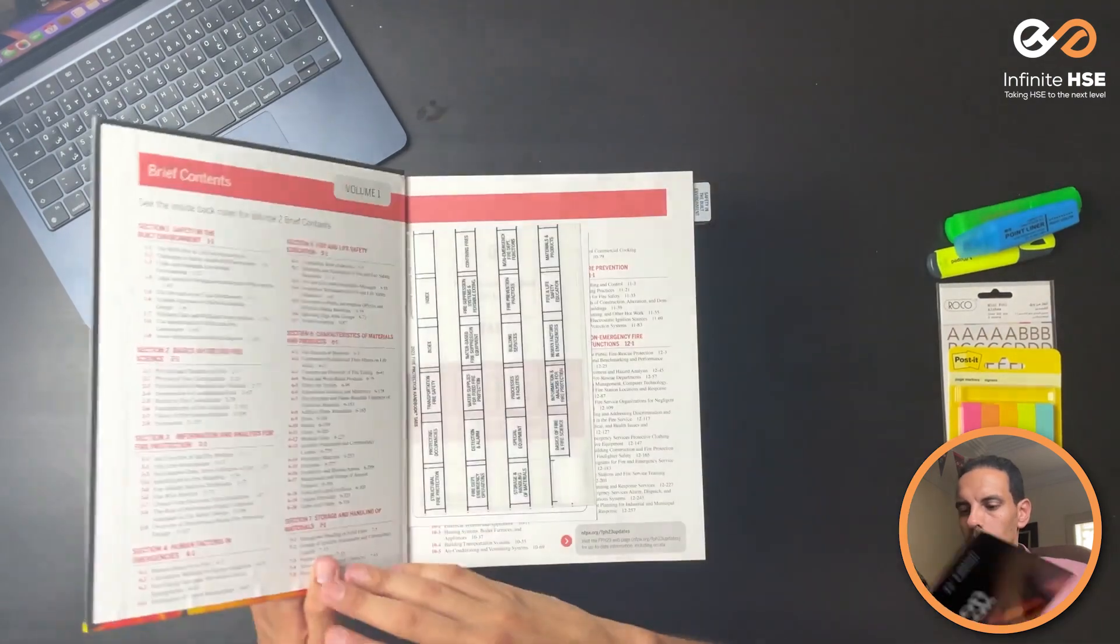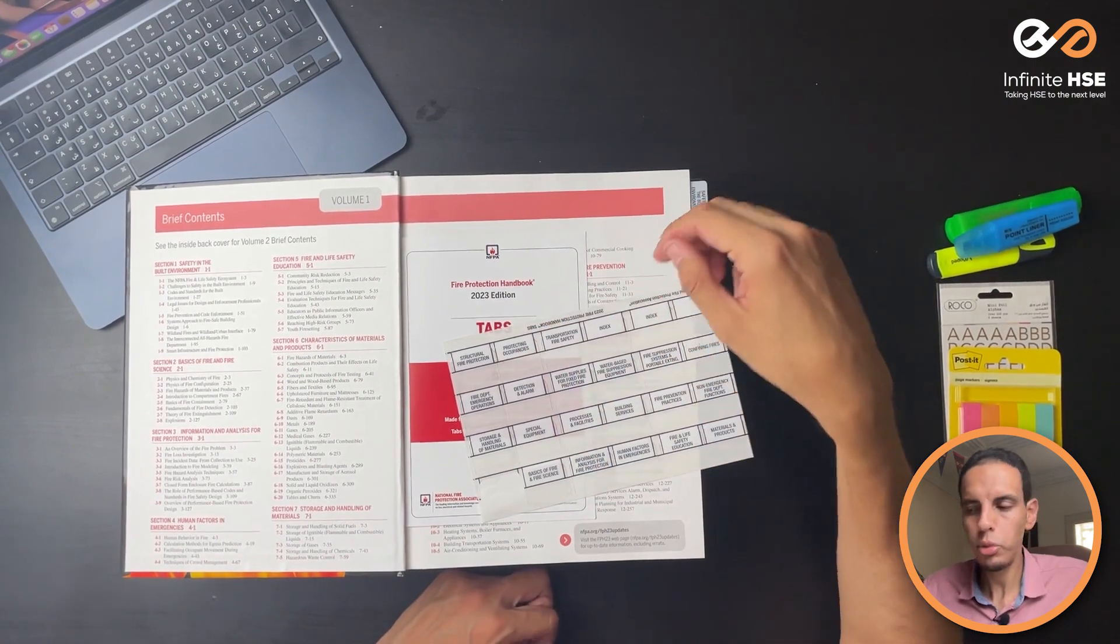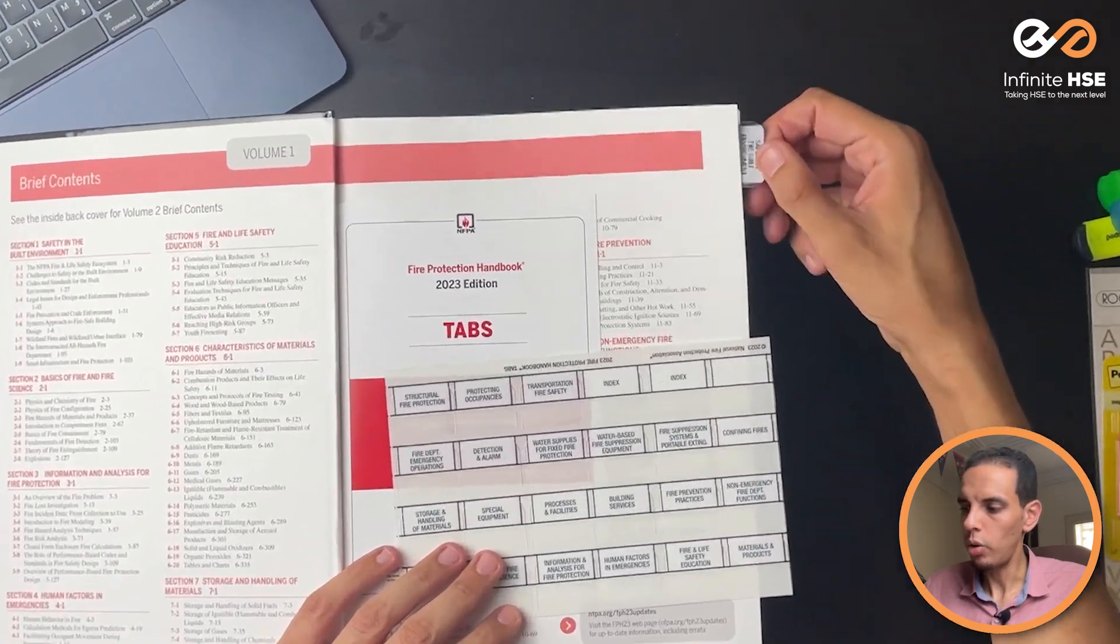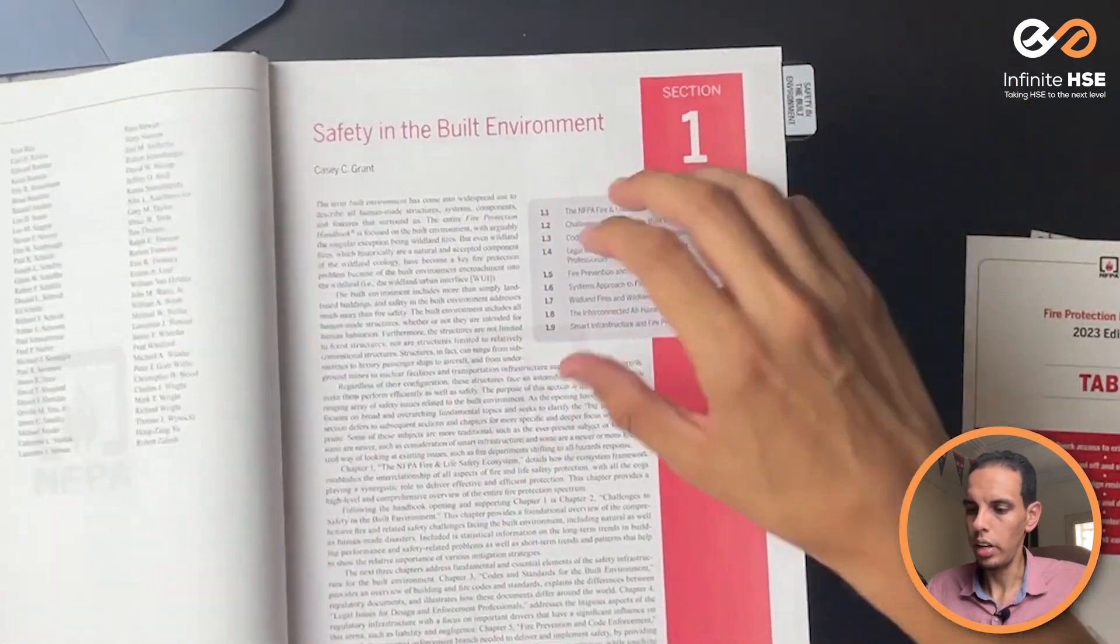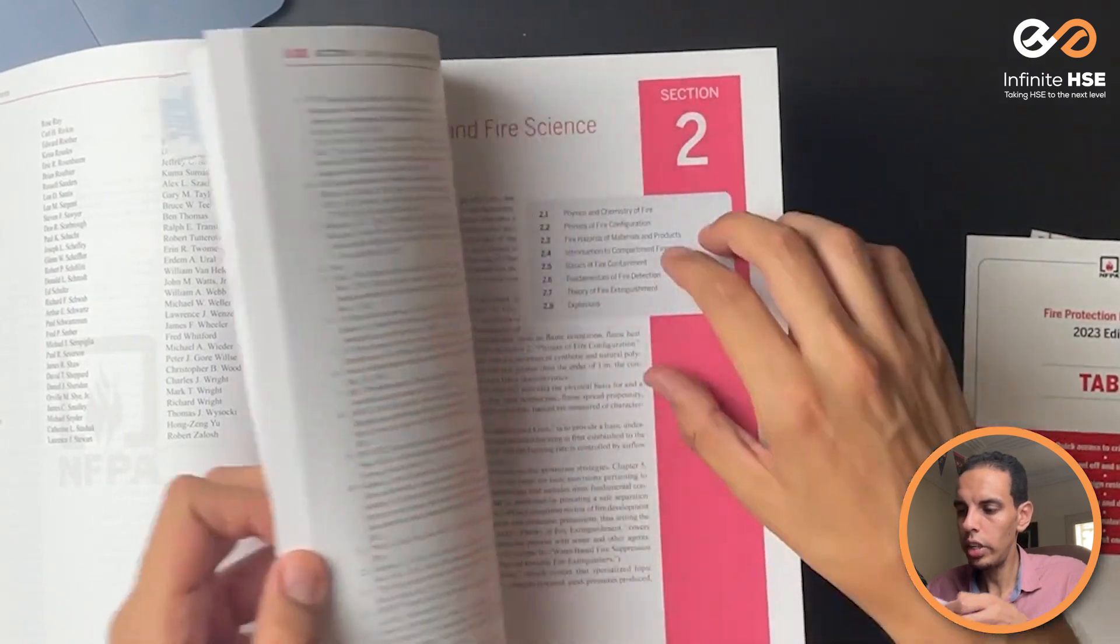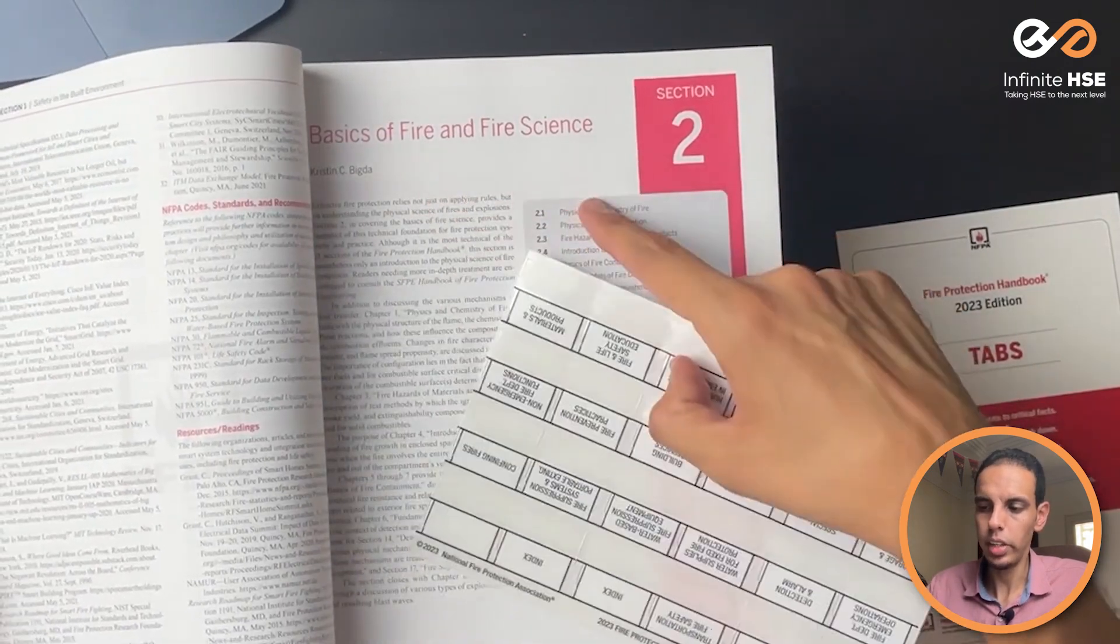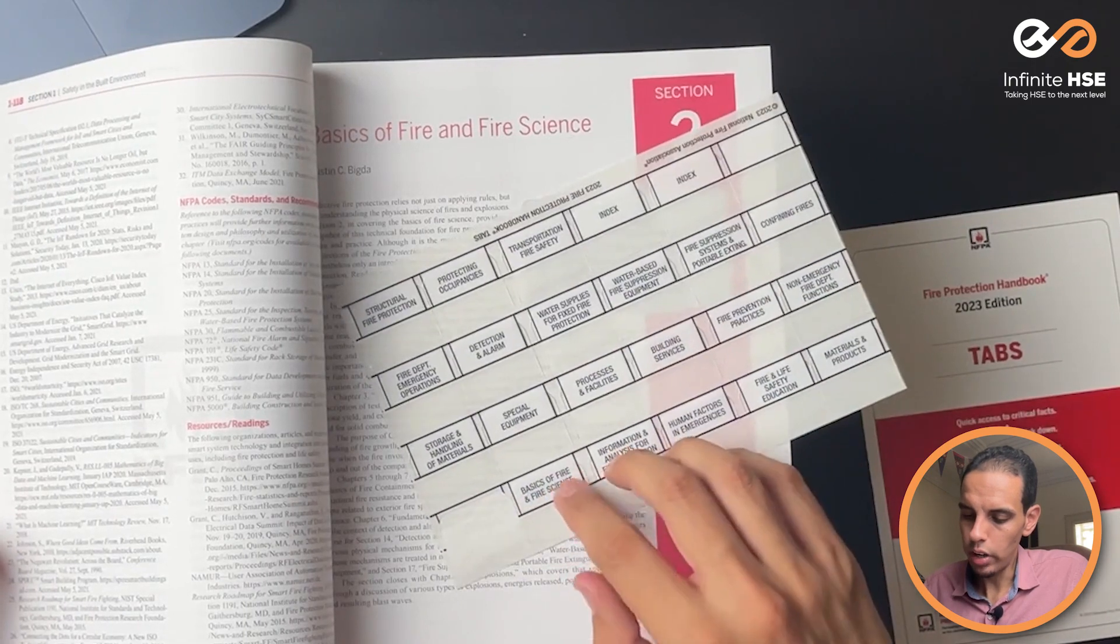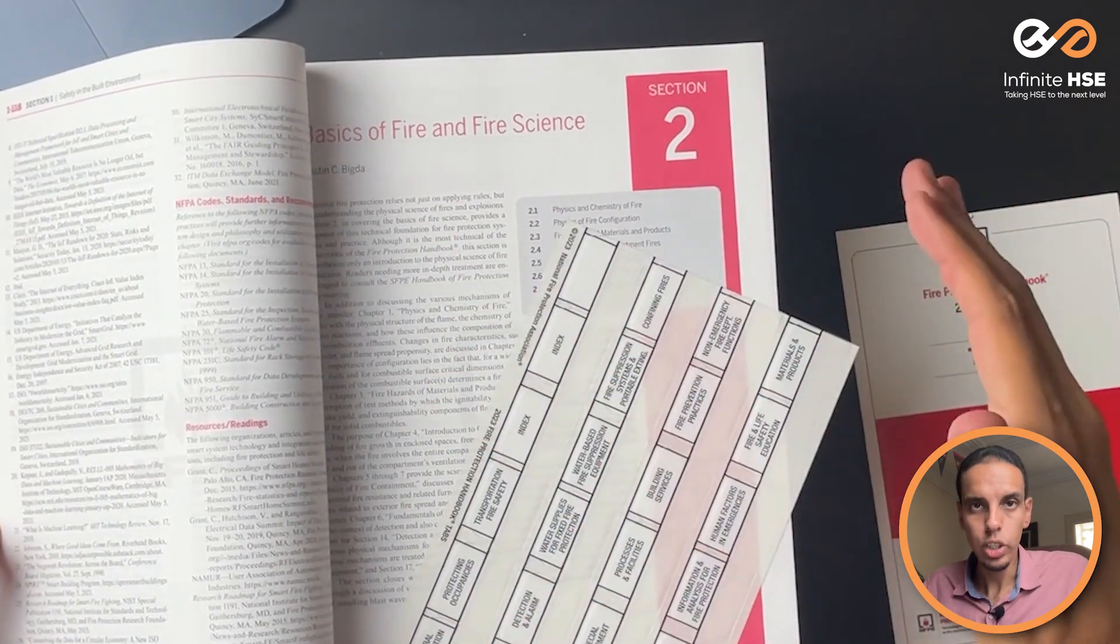When you open the Fire Protection Handbook, you will see this tag. It comes from NFPA. These tabs you will use to put a separator for each section. Like you can see here, the first section is Safety in the Built Environment. So we will go for each section to put the same tag. The second section is Basics of Fire and Fire Science. You will take it and put it at its location, and the same for all sections in the book.